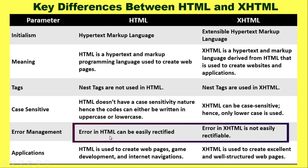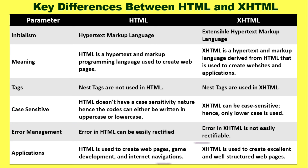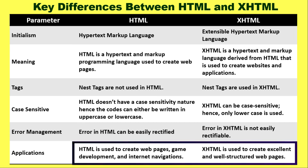Error management — how does it happen in HTML? In HTML, errors can be easily found and rectified. Whereas in XHTML, rectifying errors is a more challenging job. If we talk about the application, where does HTML get used? HTML is used in web page creation, game development, and internet navigation based websites.